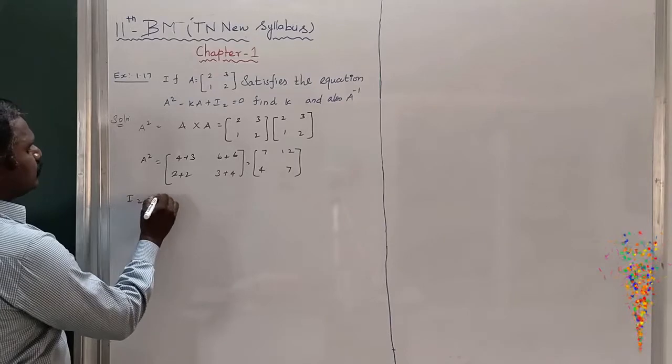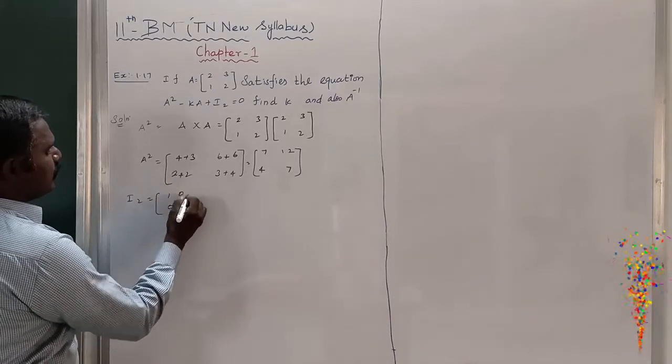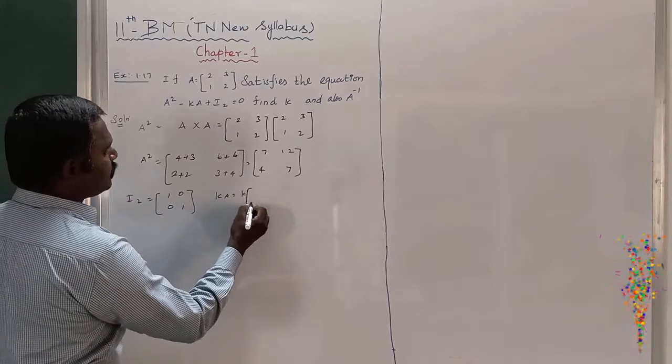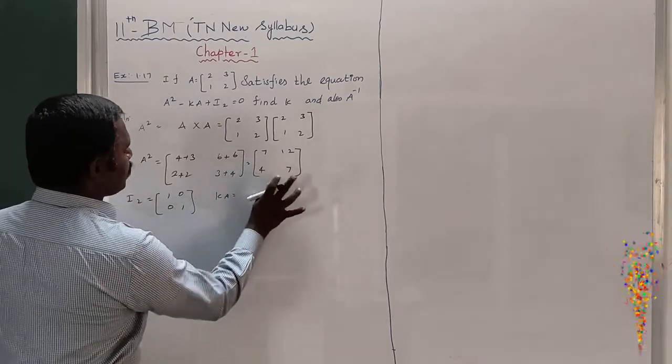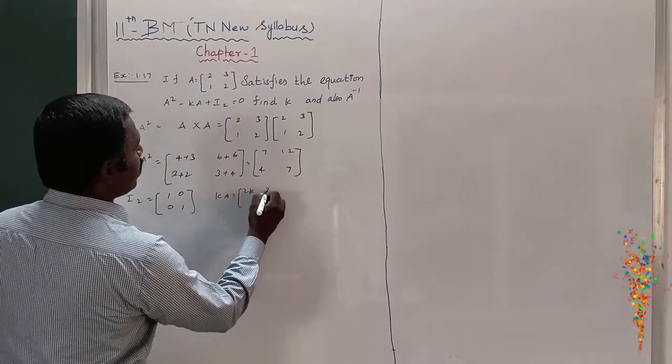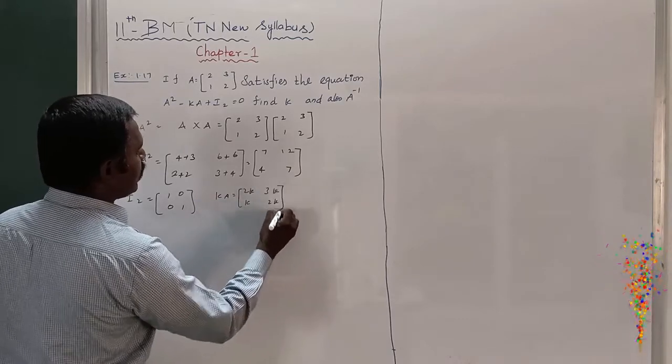I2 we already know for 2 by 2 minor is [[1,0],[0,1]]. Where KA, that is equal to K into A. Multiple of K into A, I will multiply: [[2K, 3K],[K, 2K]].